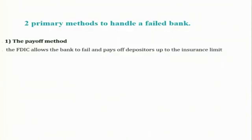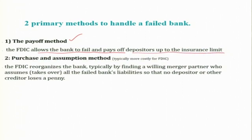There are two primary methods used to handle a failed bank. The first is called the payoff method: the FDIC allows the bank to fail and pays off deposits up to the insurance limit. The second method is called the purchase and assumption method, which is typically more costly for the FDIC. Theoretically, the conventional function of the FDIC is to pay off deposits up to the insurance limit when a bank fails. However, given the importance of the banking system, not letting a bank fail is more important.